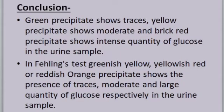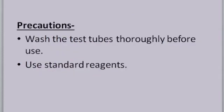Conclusion: green precipitate shows traces, yellow precipitate shows moderate, and brick red precipitate shows intense quantity of glucose in the urine sample. In Fehling's test, greenish yellow, yellowish red, or reddish orange precipitate shows the presence of traces, moderate, and large quantity of glucose respectively in the urine sample.